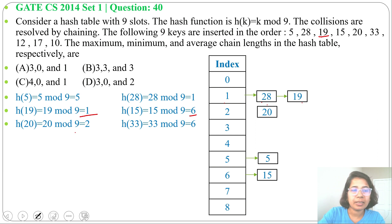Next, 33 divided by 9, remainder is 6. In index 6, 15 is already there. So we'll insert 33 and add a pointer from 15 to 33. We'll make a linked list. So now 15, 33 both are at index 6.